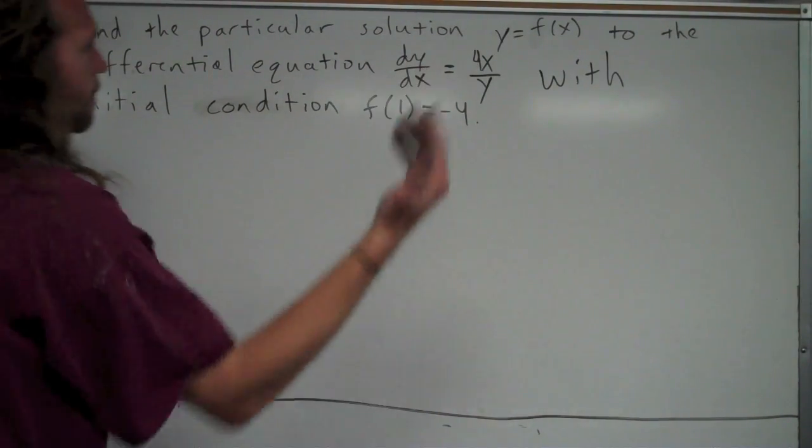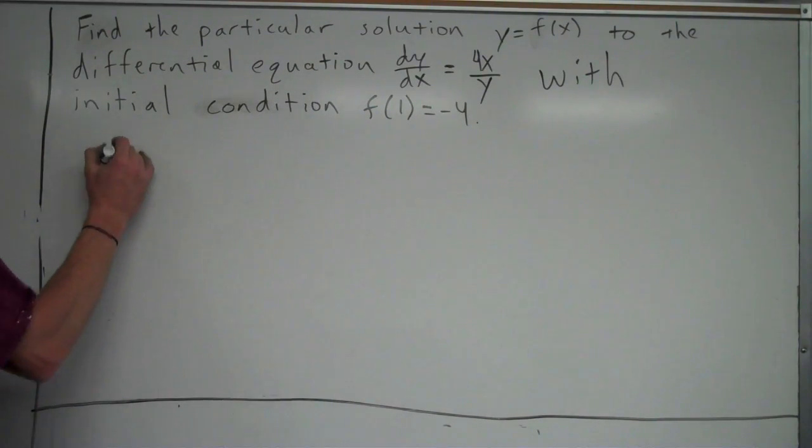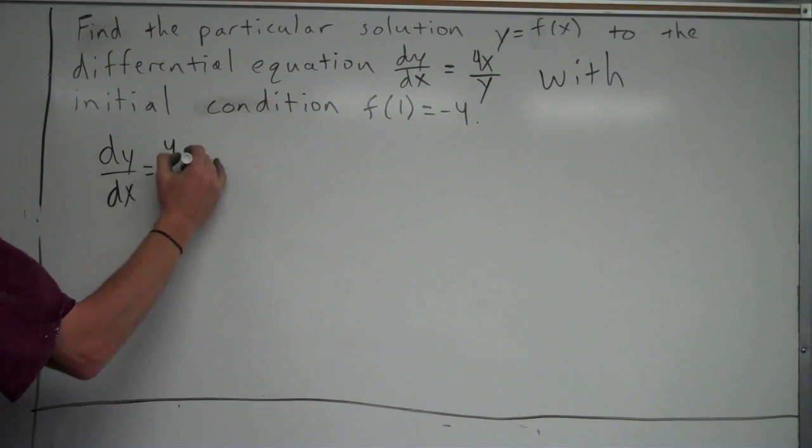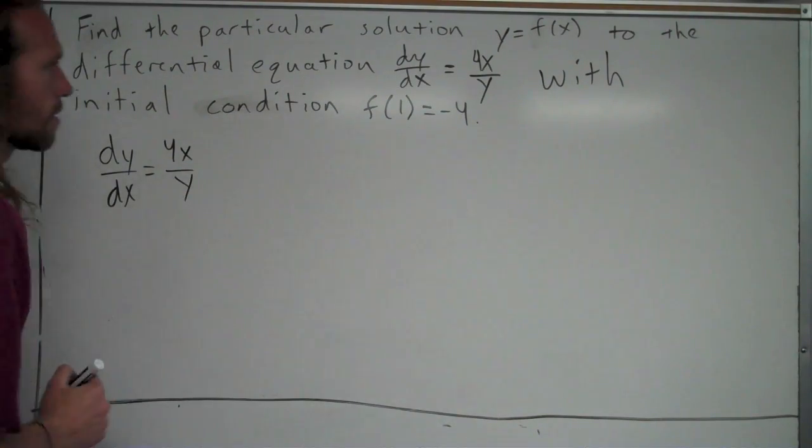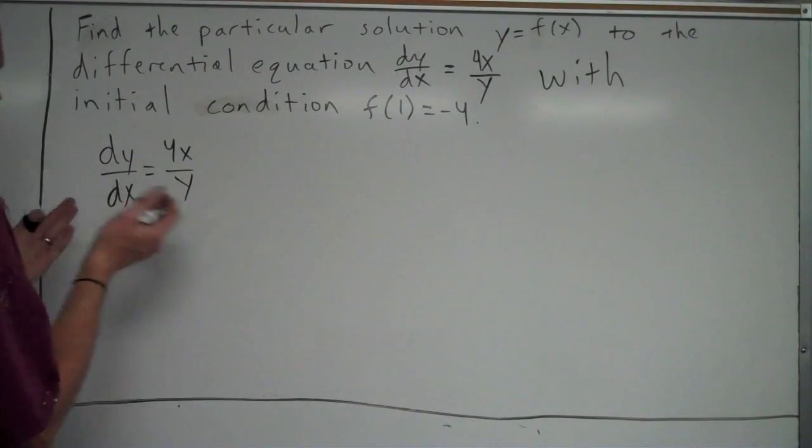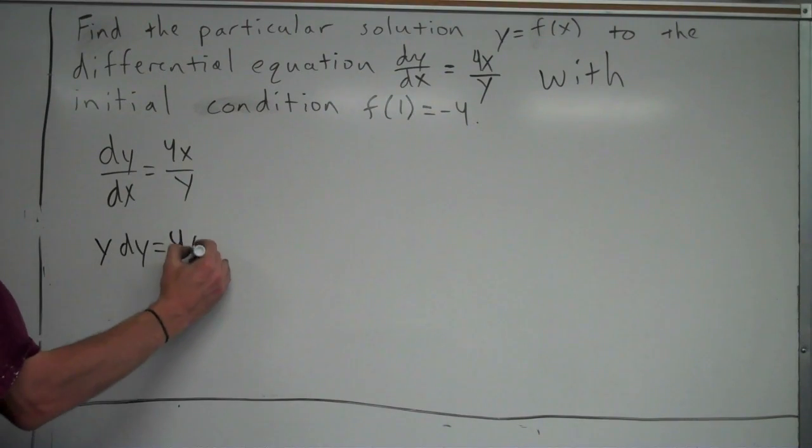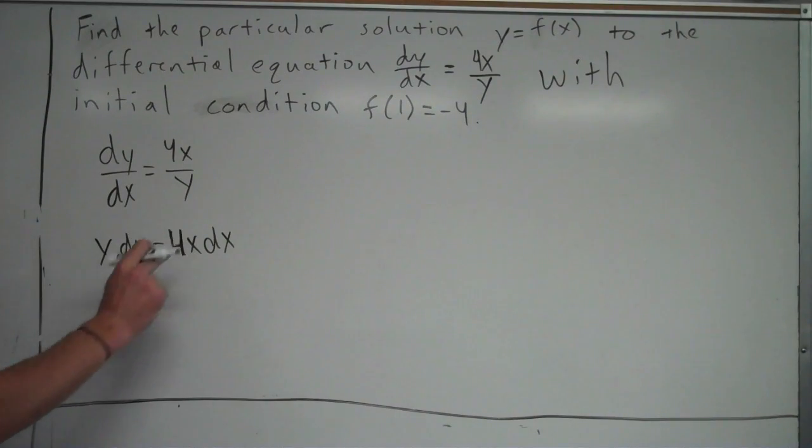So basically we're looking to find the original function. The first step, I'm going to start with our differential equation. This is an absolutely vital step: separating the variables, which means get the y's with the dy's, get the x's with the dx's. This one's fairly straightforward, just cross-multiply essentially. When you do that, you'll get y dy is equal to 4x dx. So I have the y's with the dy's, I've got the x's with the dx's, I'm ready to go.